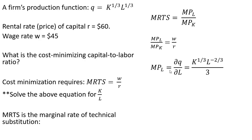The marginal product of labor is the partial derivative of the production function with respect to L. We bring down the 1/3 exponent in front of L — that's why we have division by 3 — and then 1/3 minus 1 on the exponent leaves us with L raised to the minus 2/3 power.